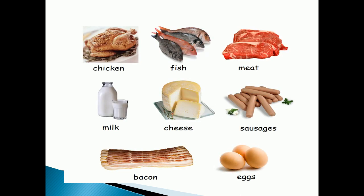In this picture again you can see the animal products which we eat as food: chicken, fish, meat, milk, cheese, sausages, bacon, and eggs. These are some of the animal products which we eat as our food.